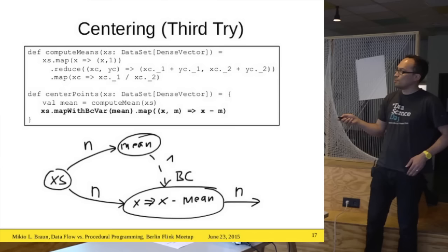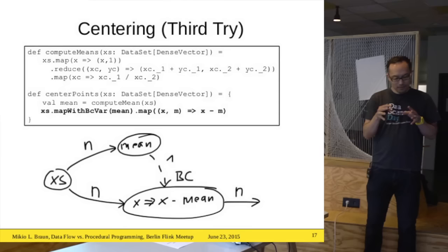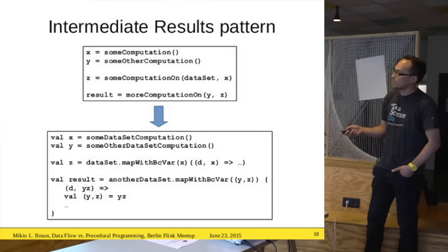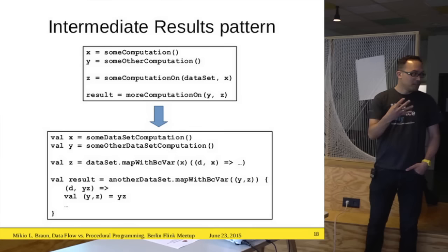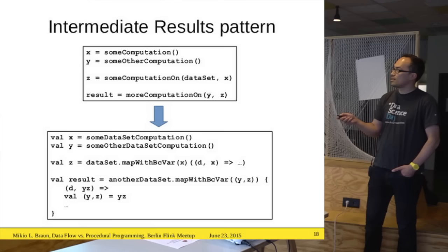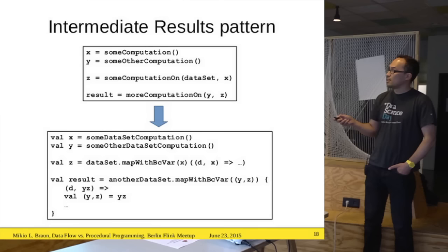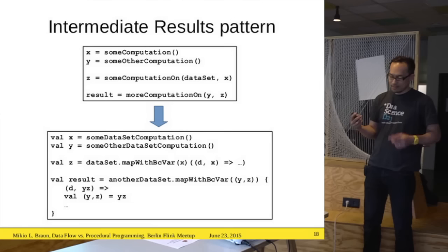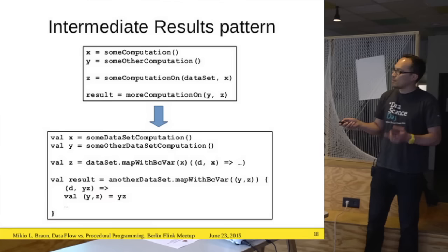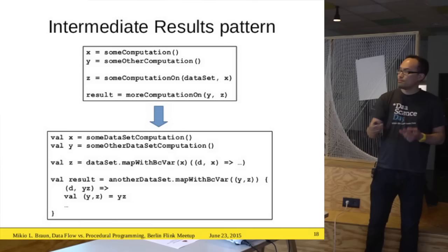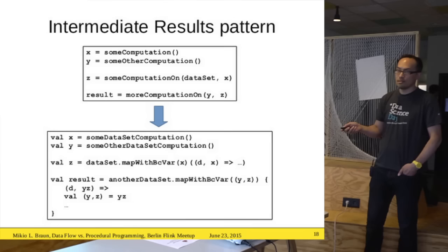In this version, all the data points are mapped with the broadcast variable instead of using the cross-with-tiny approach. The difference is that the mean only gets transmitted to each worker node once. The nice thing about Flink is you can have different stages of computation — this mean must be computed before you can compute the mapping — and because of the streaming fashion, everything is set up once but only starts after the first stage is finished.